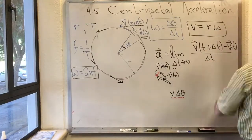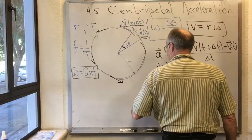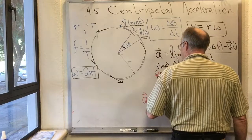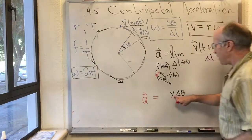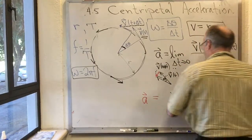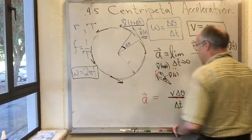But we're supposed to divide this by delta t. So we have a is equal to v delta theta over delta t. That's how long it is.